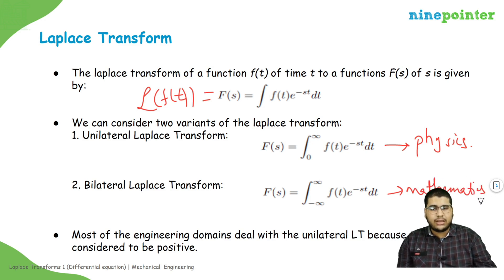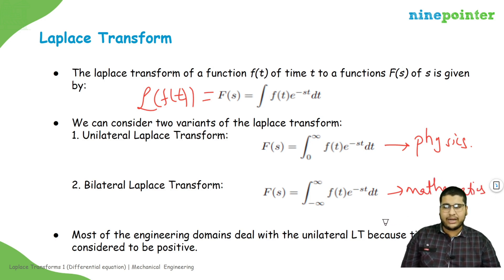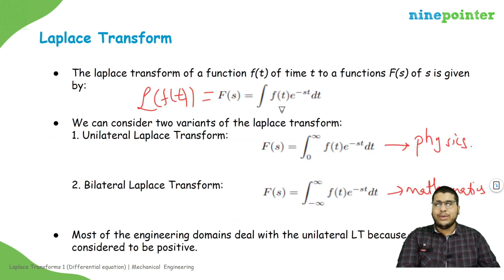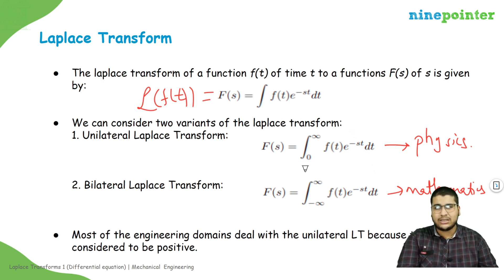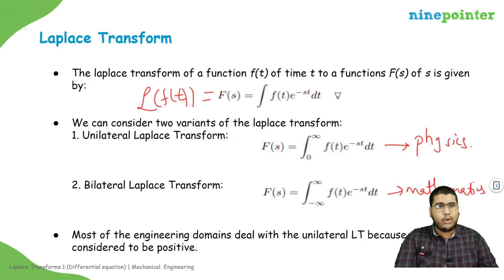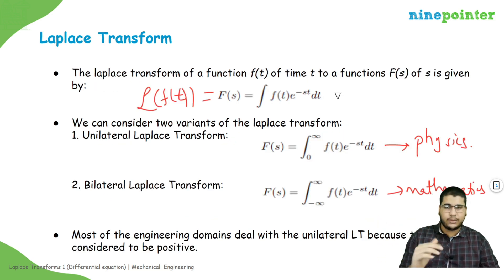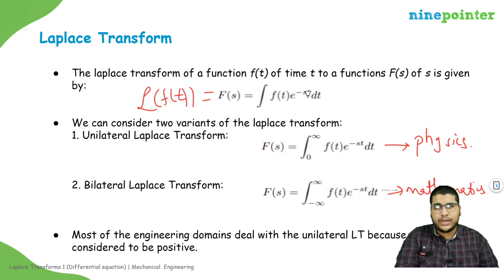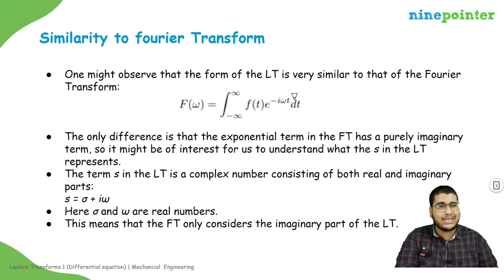If you have ever seen the form of a Fourier transform, you would notice that the Laplace transform and the Fourier transform equations are surprisingly similar. They both take a function of time as input and multiply it with some exponential term. The only difference is the power to which the exponential term is raised — for Laplace it is s, and for Fourier it is minus iota omega.